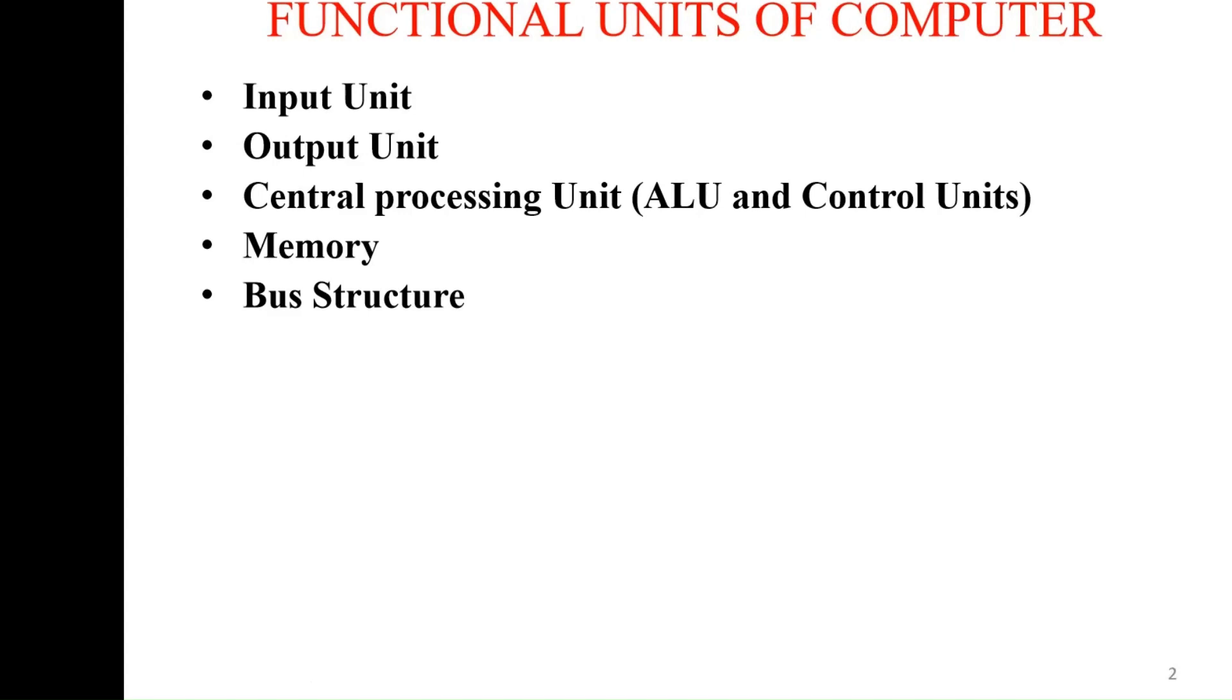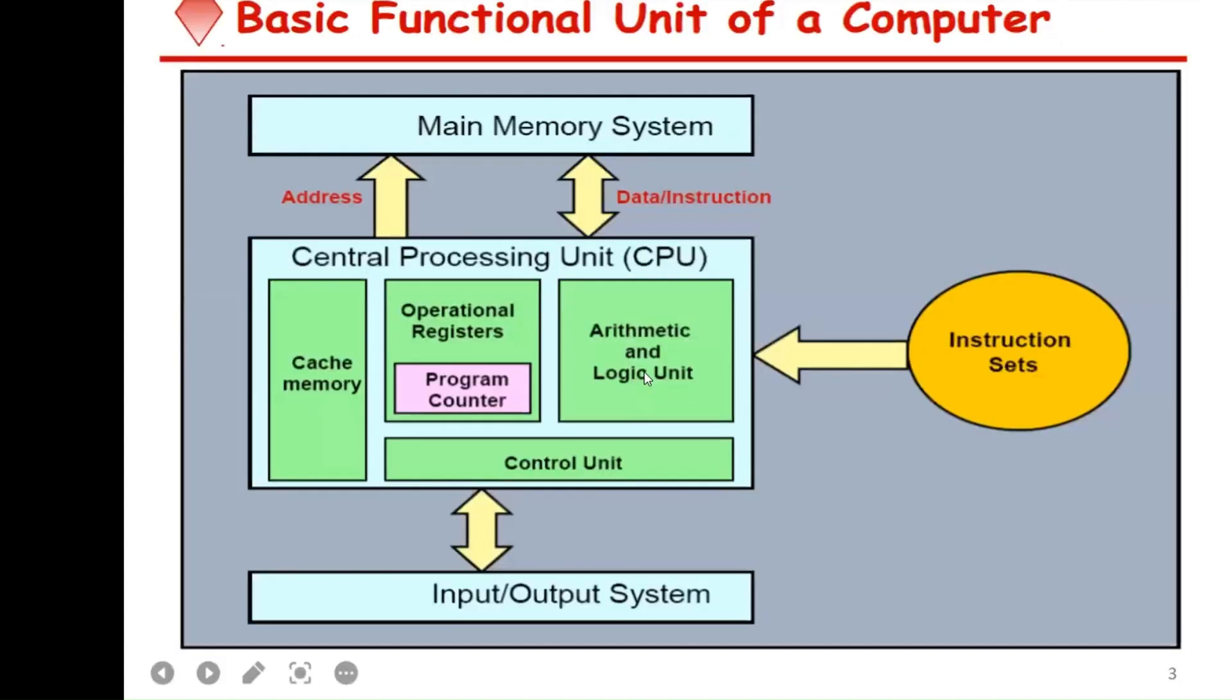Besides your memory and bus structure, the main components include your memory system associated with the central processing unit. This CPU constitutes your ALU and control unit along with registers, program counter, and cache memory. Cache memory is a temporary memory.